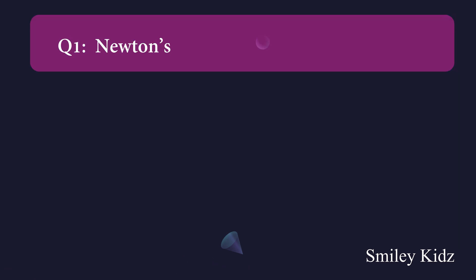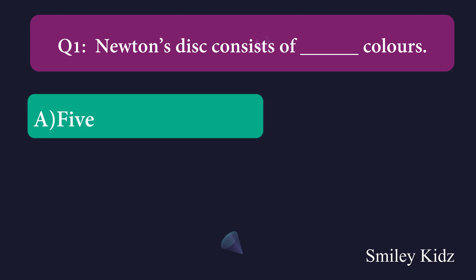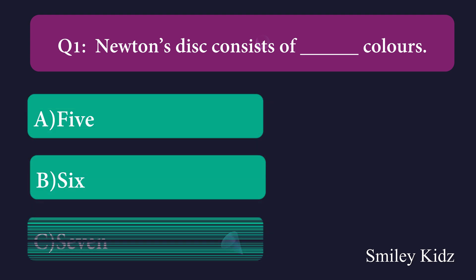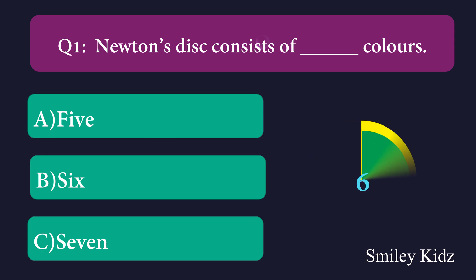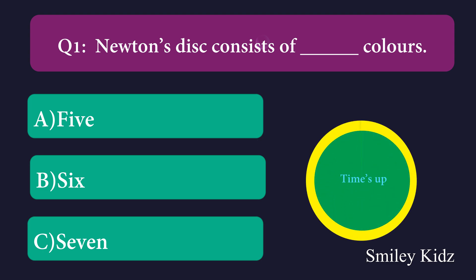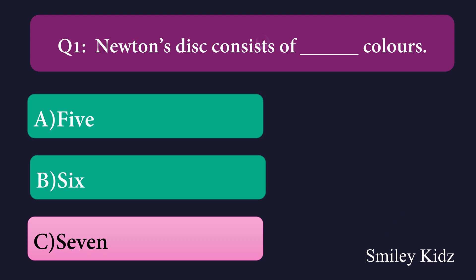Question number one: Newton's disc consists of dash colors. Option A: 5, Option B: 6, Option C: 7. The right answer is seven. Newton's disc consists of seven colors.